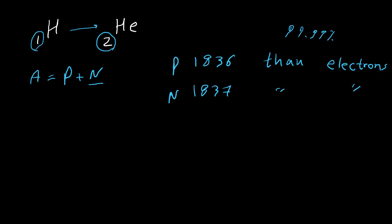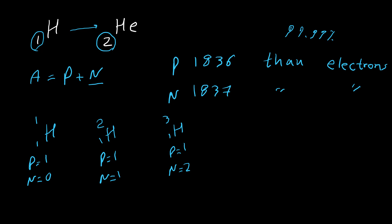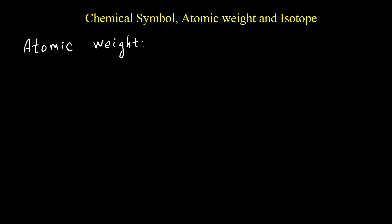Because neutrons don't affect chemical properties, we may have different types of atoms for one element that have different numbers of neutrons. For example, the regular hydrogen has one proton and zero neutrons. But hydrogen has other types: one with one proton and one neutron, and another with one proton and two neutrons. These different types of atoms for one element are called isotopes.